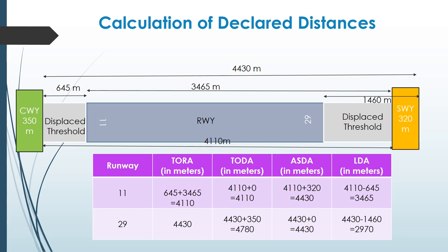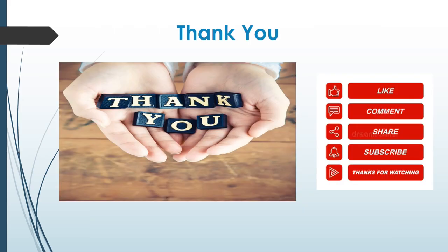So this is the calculation of all four declared distances associated with runway 11/29. You will be amazed to know that you have just calculated the declared distances of runway 11/29 of Delhi International Airport, other than the provision of clearway of 350 meters which was added for your understanding. I hope you are clear with the concept of declared distances. Do like, share, and subscribe if this video helped you in clearing your concepts, and let us know in the comment section below what more videos you'd like to watch. Do visit our website aviationabbey.com — go where you feel the most alive.